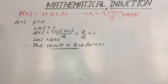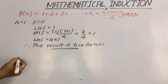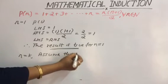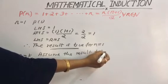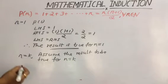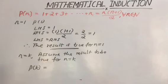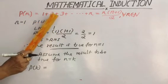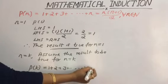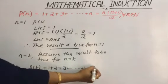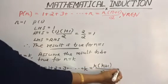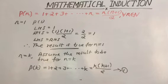Second step: Let us assume the result to be true for n equal to k. That means replacing n by k. We write: assume the result to be true for n equal to k. The proposition converts to the form P of k, meaning k terms will be there in the expansion: 1 plus 2 plus 3 up to k, equal to k(k+1) divided by 2. Let us number this as equation 1. This completes the second step of mathematical induction.